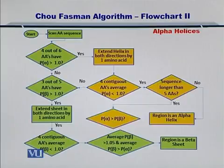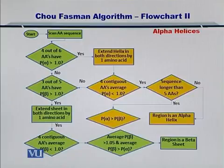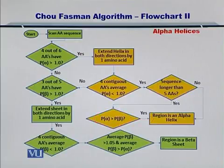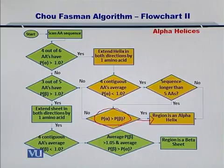If the sequence is longer than 5 amino acids and the propensity for forming an alpha helix is still greater than the propensity for forming a beta sheet, as shown here, then you still declare the region to be an alpha helix. However, if that is not the case, then you may want to revert to forming a beta sheet.